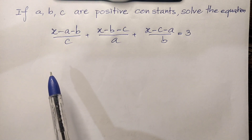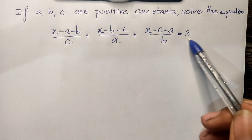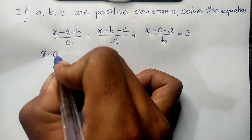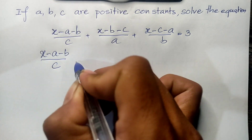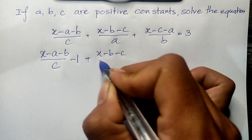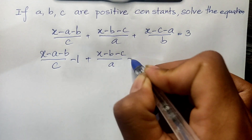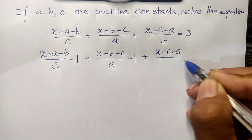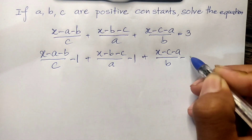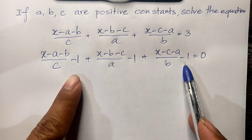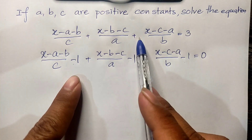Okay, now we go in. I replace 3 from the right side to the left side. So we get (h minus a)(h minus b) divided by c, minus 1, plus (h minus b)(h minus c) divided by a, minus 1, plus (h minus c)(h minus a) divided by b, minus 1, is equal to 0. You see this? The three minus 1 terms give us minus 3, which is how we moved 3 from the right side to the left side.